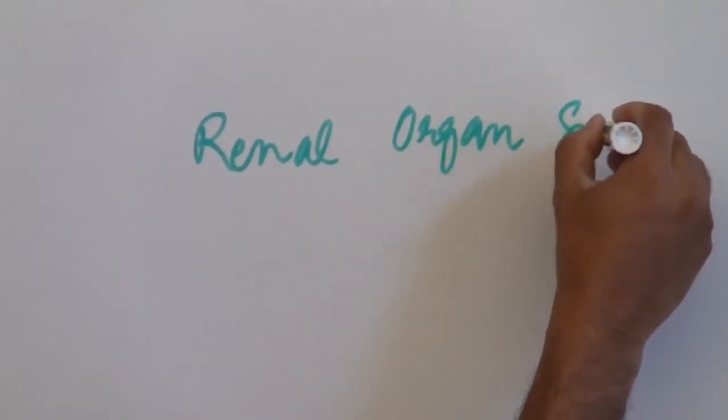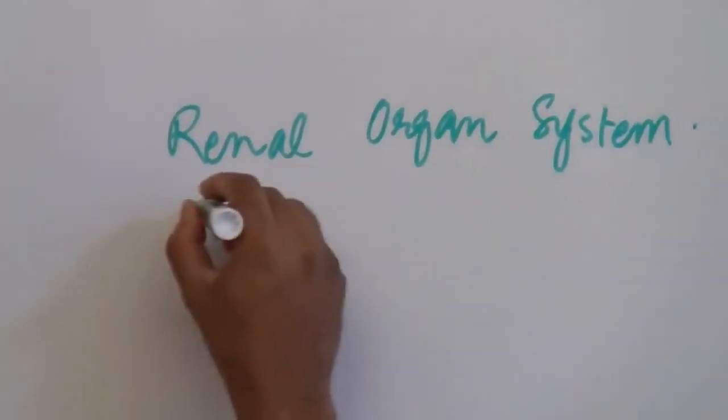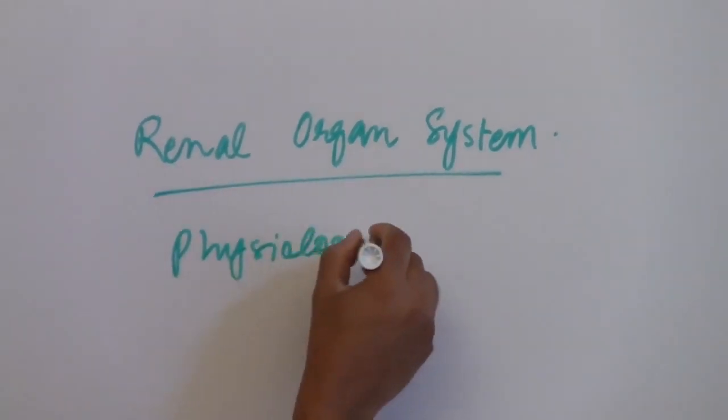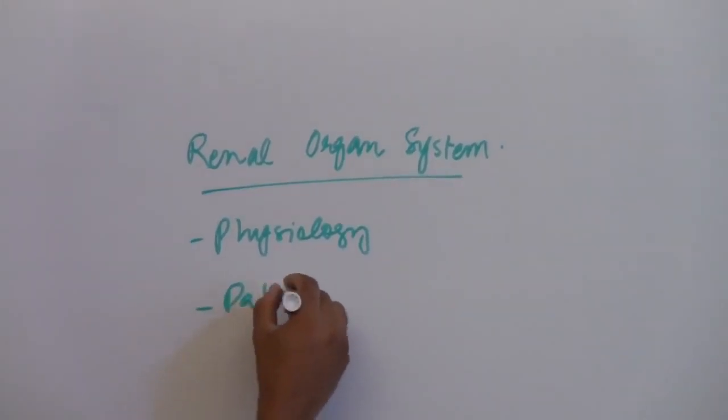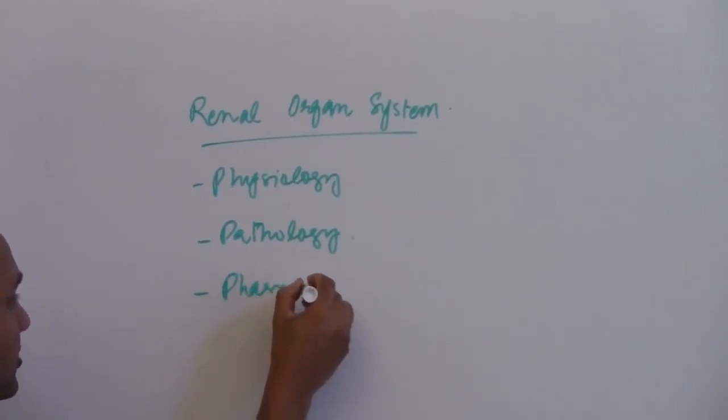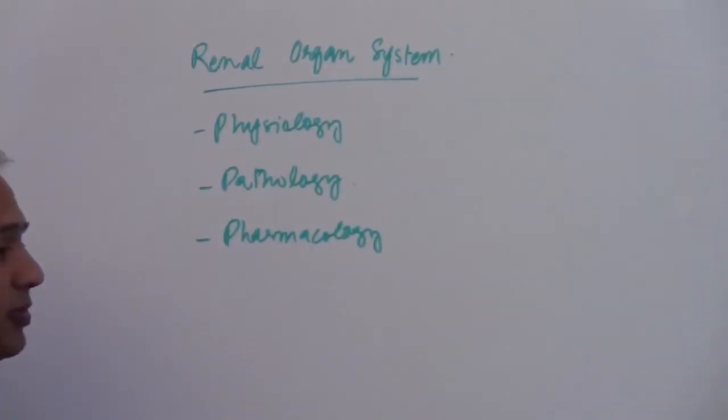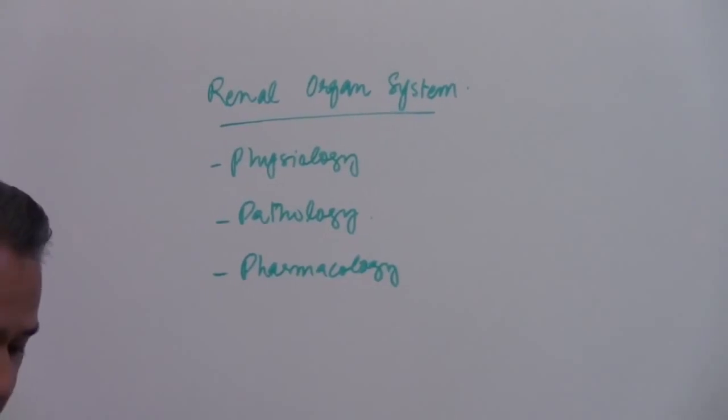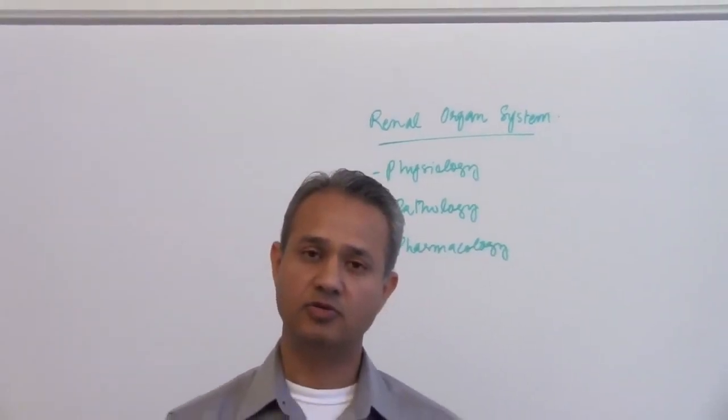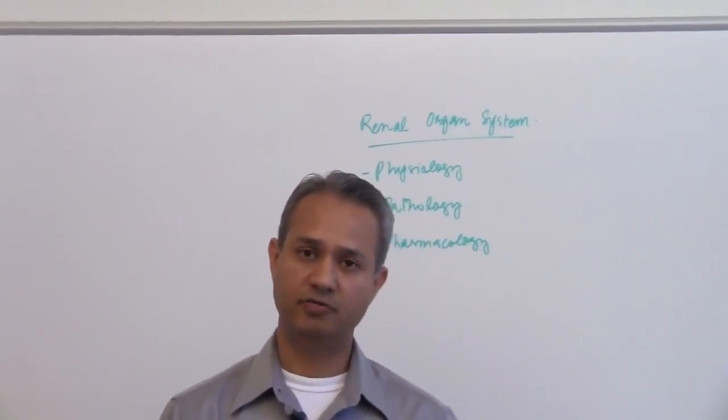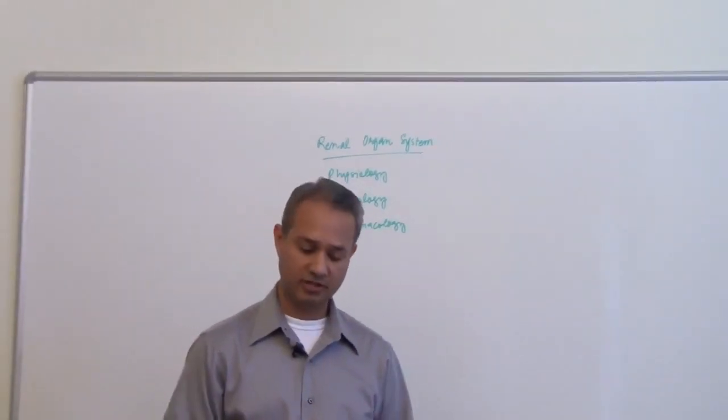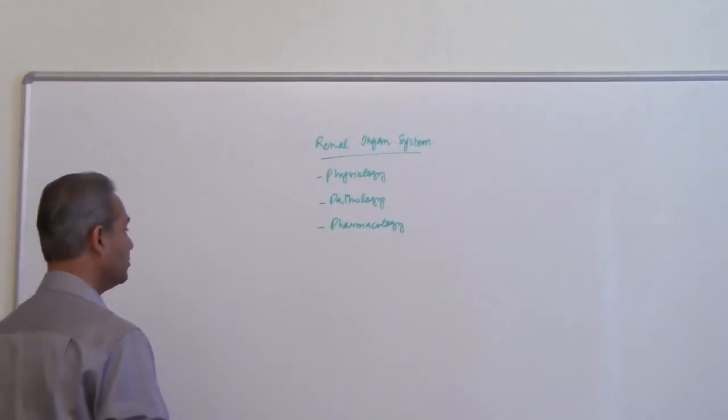What we will do is, we will do physiology, then we will do pathology of the kidneys or the renal system and then we will do pharmacology. I am hoping that within 10 hours of lectures one organ system will be taken care of. We have about 11 organ systems to study. About 110 hours and we would be done with the physiology, pathology and pharmacology of various organ systems.